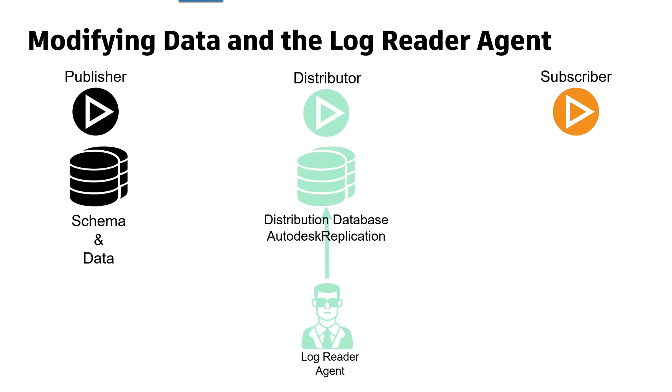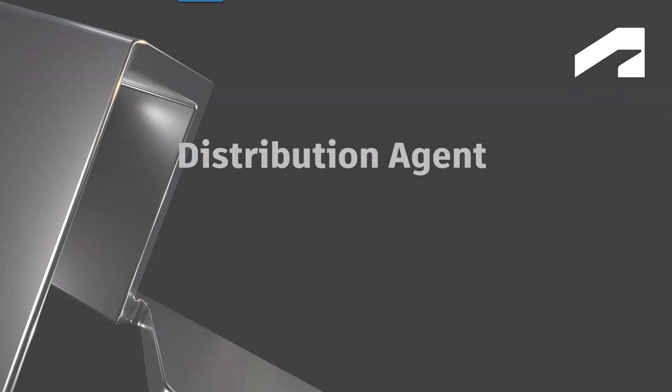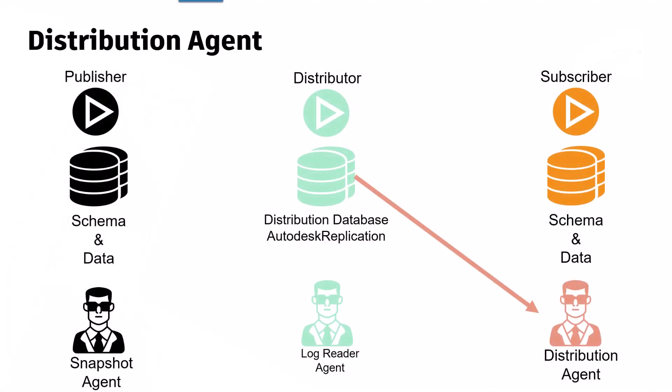Subscribers receive transactions in the same order in which they were applied at the publisher. The distribution agent runs at the distributor for push subscriptions and at the subscriber for pull subscriptions, and moves transactions from the distribution database to the subscriber. If a subscription is marked for validation, the distribution agent also checks whether the data at the publisher and subscriber match.